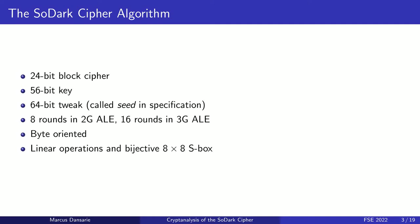The SODARC cipher is a 24-bit block cipher that uses a 56-bit key and a 64-bit tweak. In second generation ALE the cipher has 8 rounds, and this was extended to 16 rounds in third generation ALE. The cipher performs all operations on three 8-bit state bytes, and all operations are linear except for lookups in an 8x8-bit S-box. In second generation ALE the cipher is actually called the lattice algorithm, but I've chosen not to use that name in order to avoid confusion with lattice cryptography.